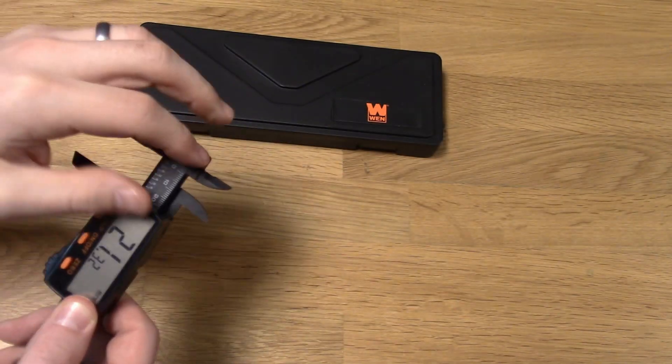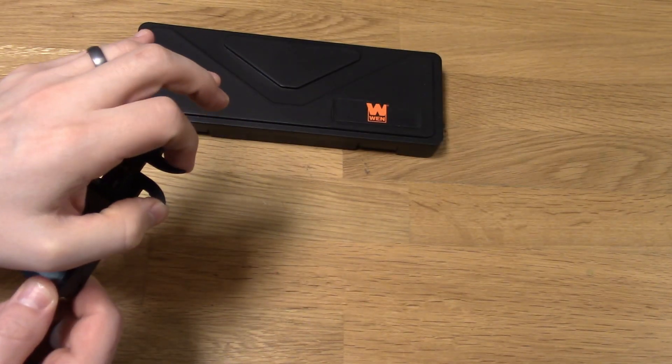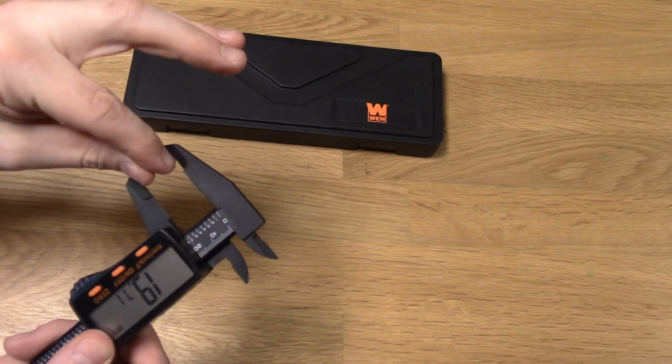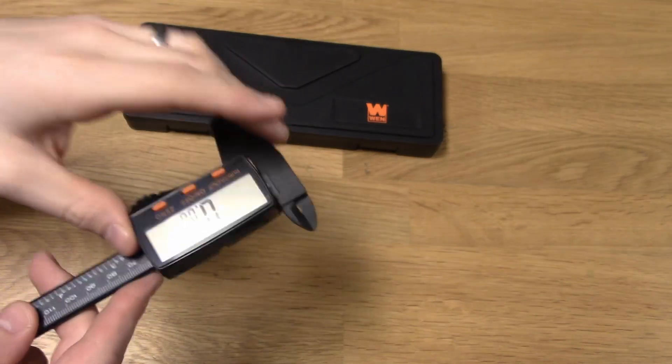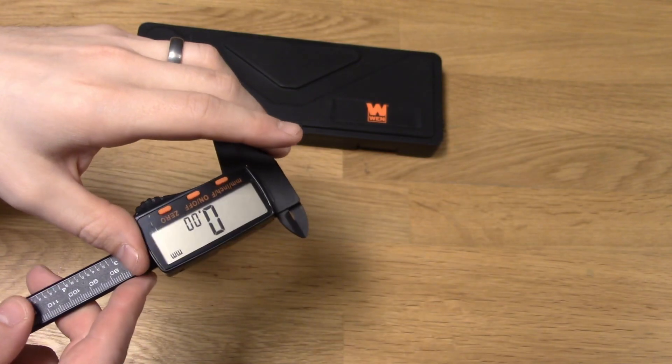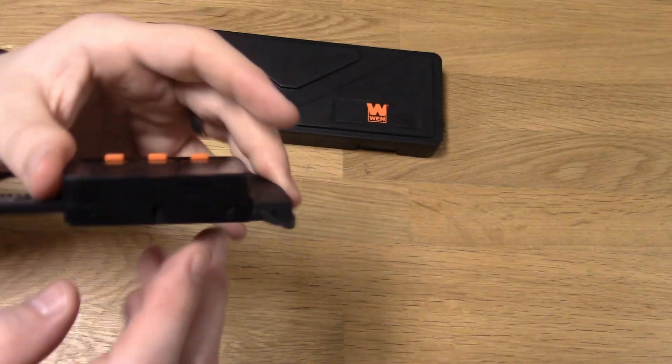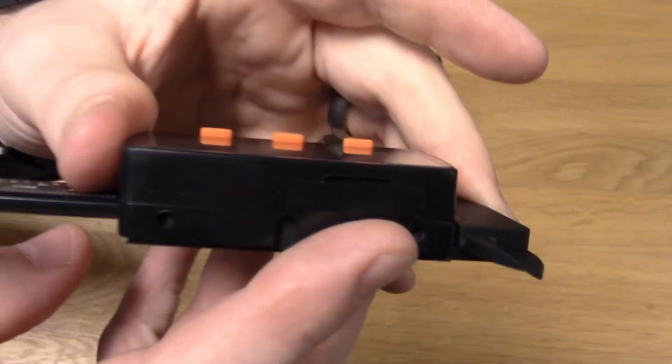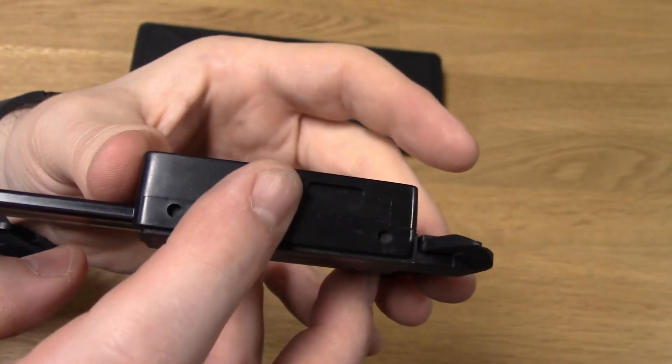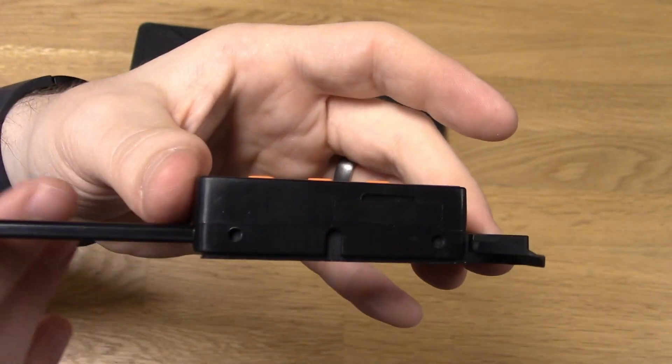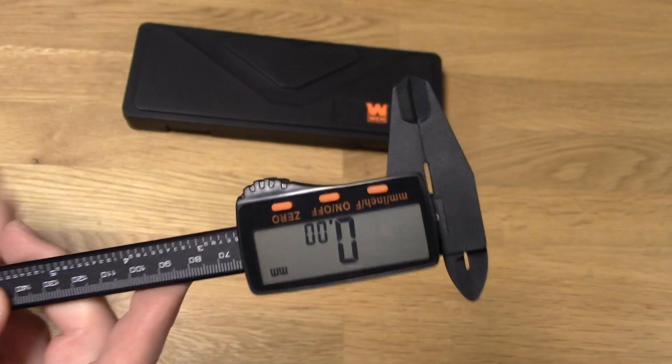It has the standard caliper features, like to measure in between something and measure over something. The battery for this comes with it and it is a CR2032. And you just pop this little cover off here and put it in there. It took about a second to do that. Very, very easy.